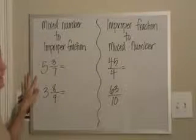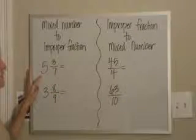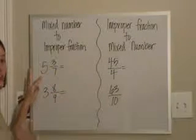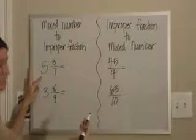A mixed number is a combination of a whole number and a fraction. Five and three-sevenths is like saying you have five whole pizzas and three-sevenths of another pizza.